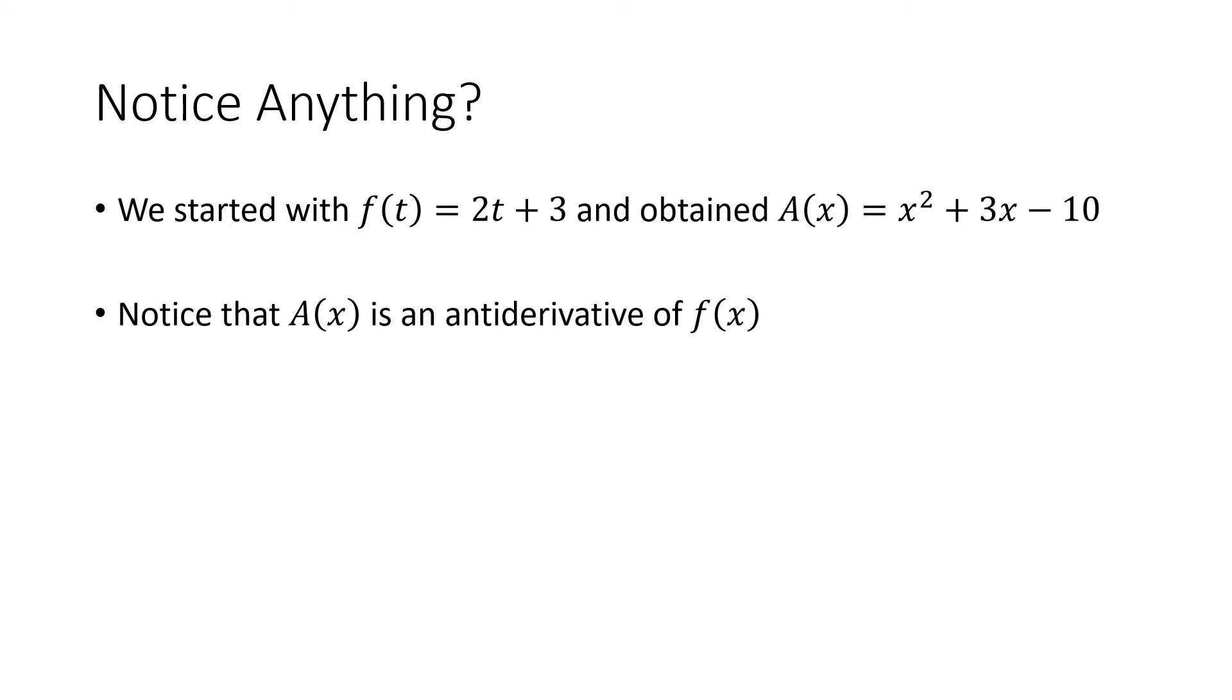Okay, so what might we notice here? Well, we started with the function 2t plus 3, which again we're thinking is not really being that much different from 2x plus 3. We're just changing it to t to avoid confusion. And then what we ended up with was x squared plus 3x minus 10. And what you might notice is that if we took an antiderivative of 2x plus 3, we talked about those a little while back, that's going to give us x squared plus 3x plus a constant. And so you might notice that there's actually some connection there.